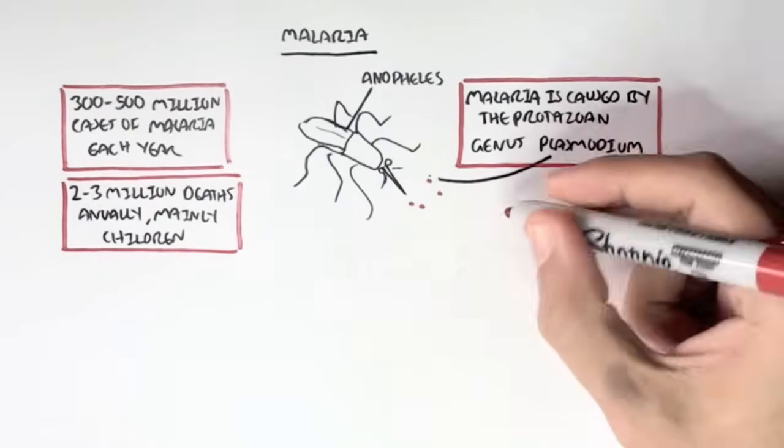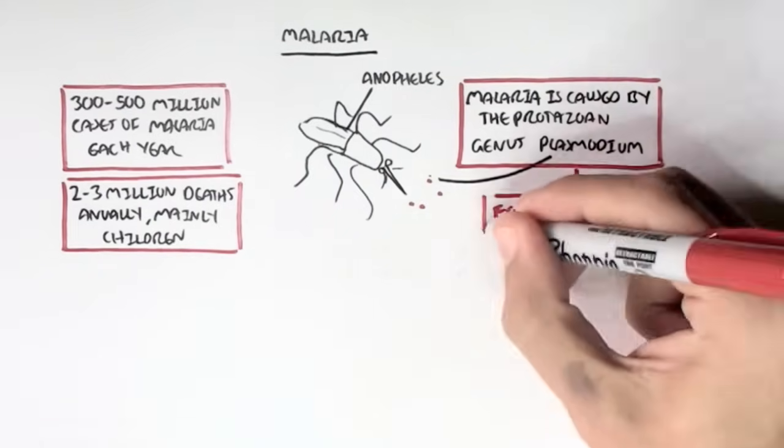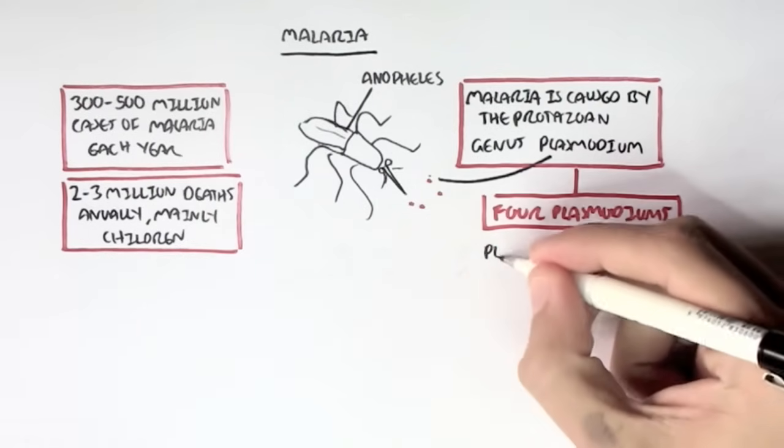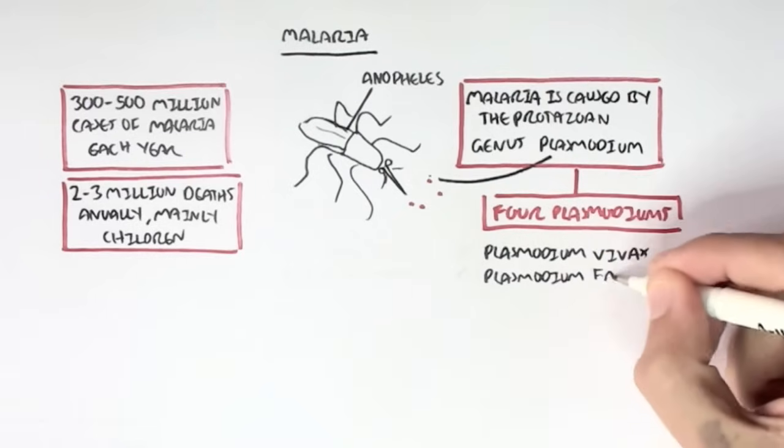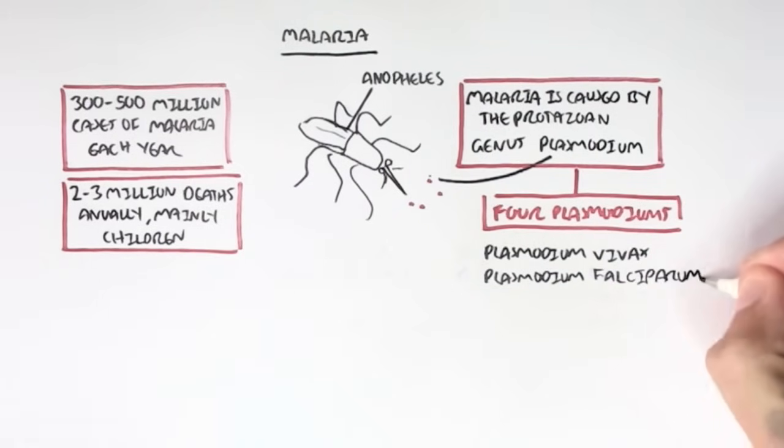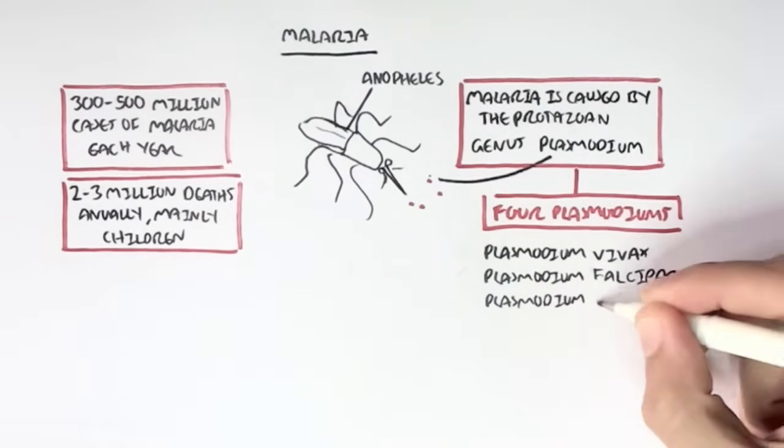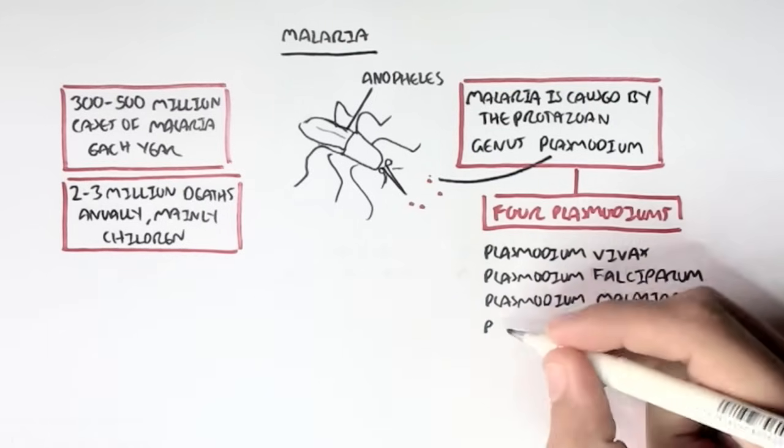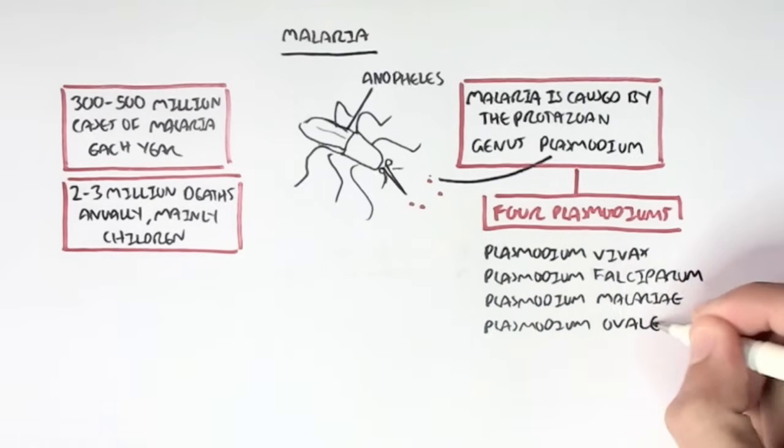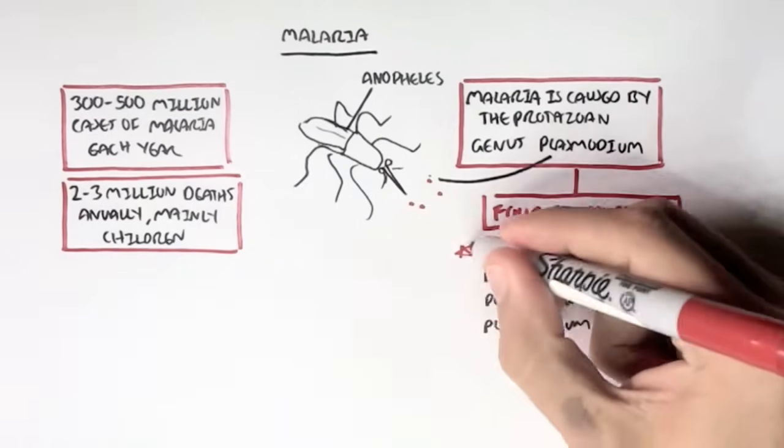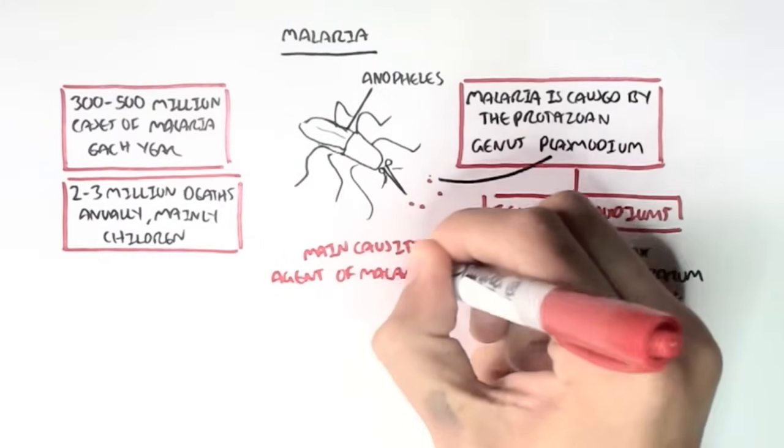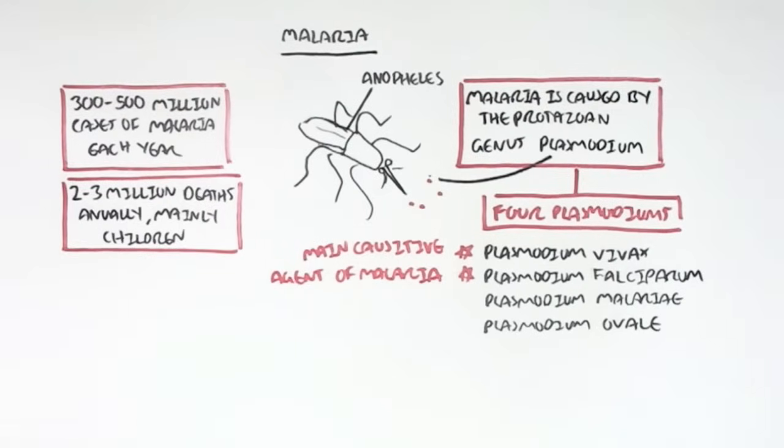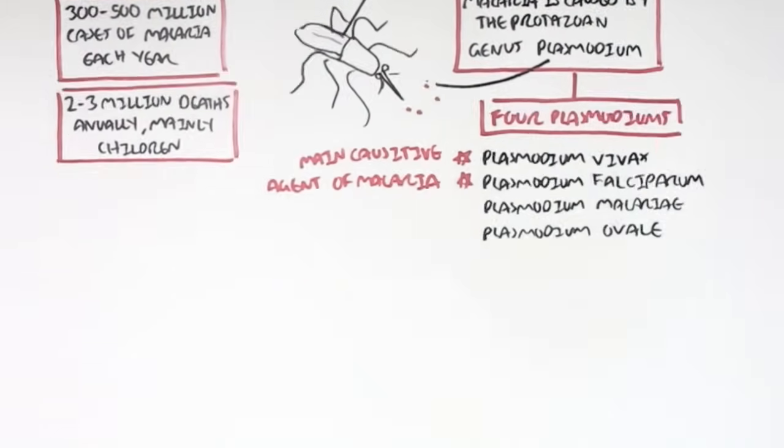So Plasmodium is a parasitic genus that causes malaria. There are actually a few types of Plasmodiums that infect man. These are the Plasmodium vivax, Plasmodium falciparum, Plasmodium malaria, and Plasmodium ovale. Now, as the name suggests, you would probably think Plasmodium malaria is the main agent, like causative agent. But it's actually not. Plasmodium vivax and Plasmodium falciparum are the main agents of malaria.